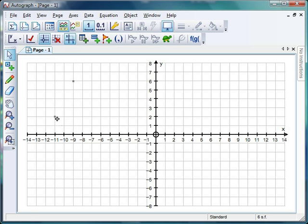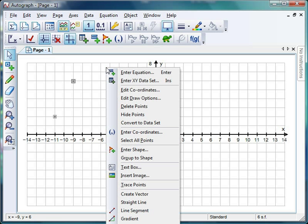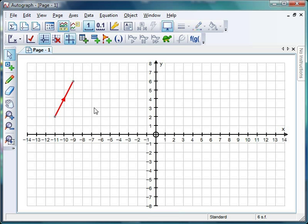First, select what you want the tail of the vector to be, so give that a little click. And then select what you want the nose of the vector to be. Give that a little click. With both of those selected, right-click, and somewhere down there, create vector, and you get a lovely vector there.